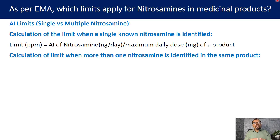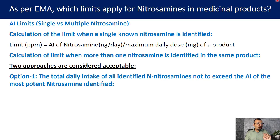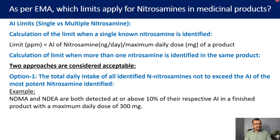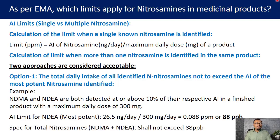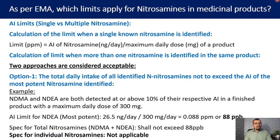When more than one nitrosamine is identified in the same product, there are two possible approaches. Option 1 is that the total daily intake of all identified nitrosamines does not exceed the acceptable intake of the most potent nitrosamine impurity identified. For example, where NDMA and NDEA are both present above 10% of their acceptable intake, with a maximum daily dose of 300 mg: since NDEA is the most potent, its acceptable intake limit is 88 ppb, and the total nitrosamine limit for both NDMA and NDEA is set at no more than 88 ppb. Under option 1, individual specs per nitrosamine are not applicable.